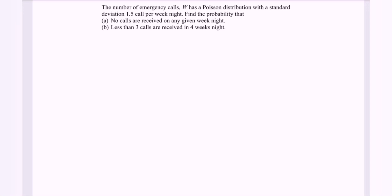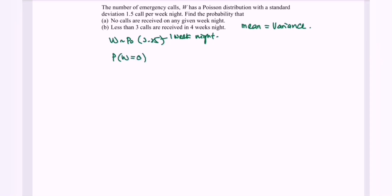In this video, I'm going to discuss the example for special probability distribution. The number of emergency calls W has a Poisson distribution with standard deviation 1.5 calls per weeknight. For Poisson distribution, mean equals variance. To find the mean, square the standard deviation: 1.5² = 2.25. For part A, probability that W = 0: e^(-2.25) × (2.25^0)/0! = 0.1054.